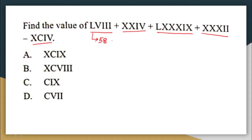Then XX is 10 + 10 = 20, and with 4 after it, that is 24. Then L is 50, followed by three tens (XXX = 30), giving 80, plus 9 gives 89. Then we have XXXII which is 32.